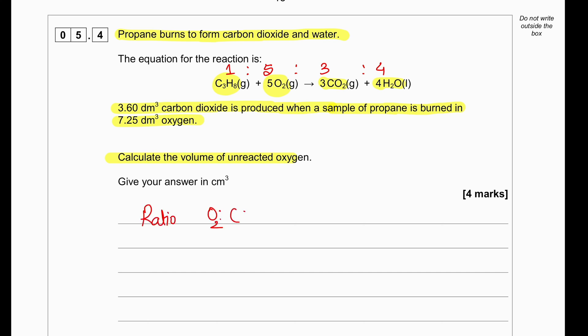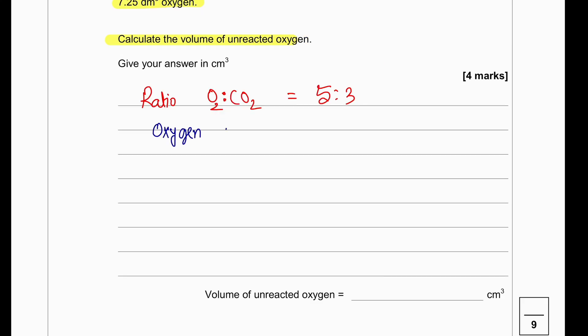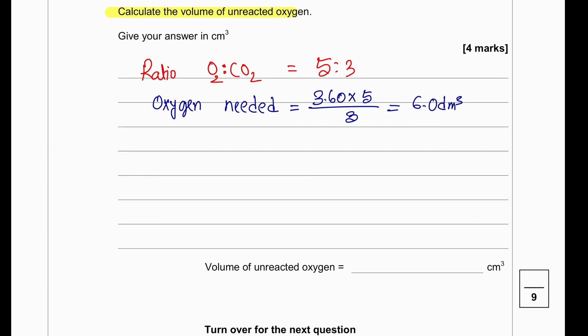The required amount of oxygen will be 3.6 dm³ of CO2 will require 3.6 divided by 3 multiplied by 5. So 6 dm³ of oxygen will be required.